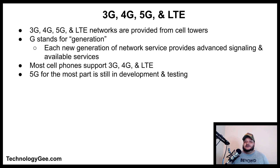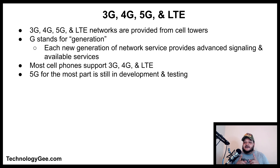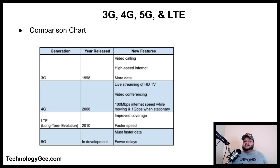3G, 4G, 5G, and LTE networks are provided from cell towers. The G stands for generation, and each new generation provides advanced signaling and services. Most cell phones in use now support 3G, 4G, and LTE. 5G is still largely in development and testing, but once it is fully deployed it will enable technologies like driverless cars and automation. A comparison chart of 3G, 4G, 5G, and LTE is available at the website.